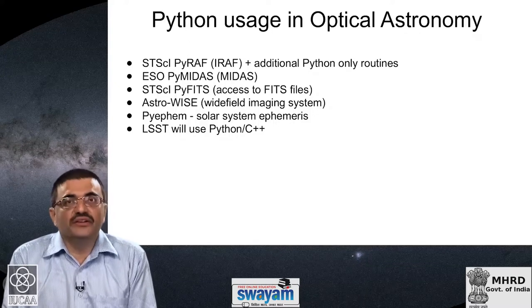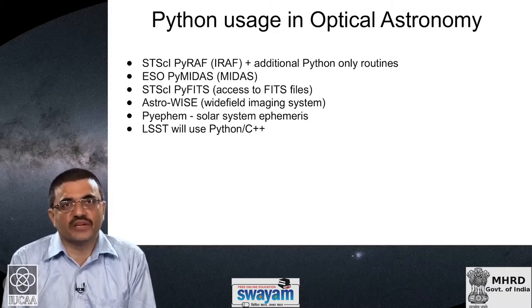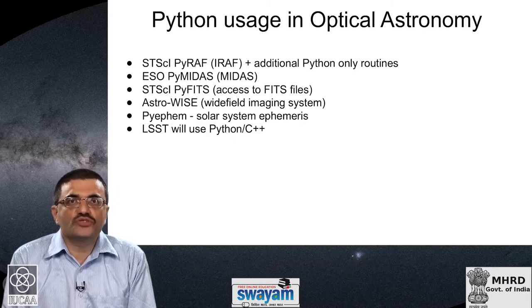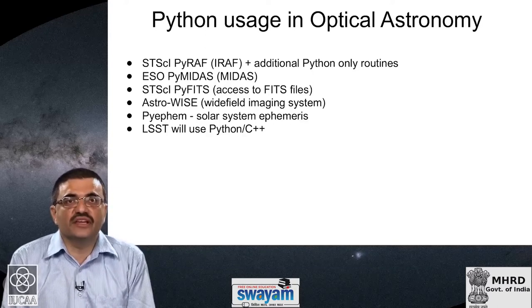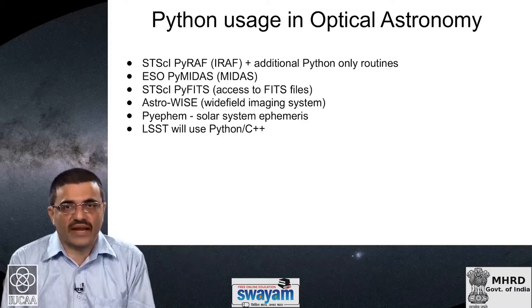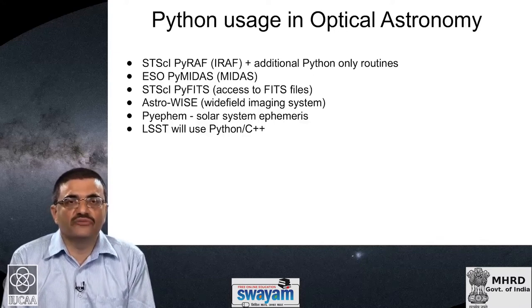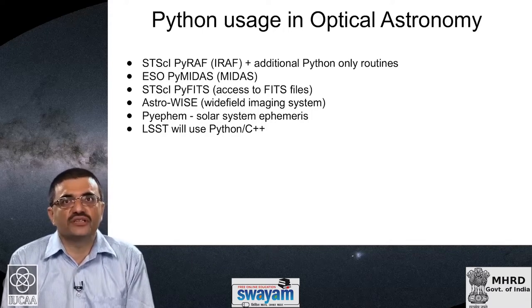Python is very widely used in all of astronomy. In optical astronomy, one of the most widely used packages for optical data analysis is a package called IRAF — Image Reduction Analysis Facility — which was developed several decades ago and is still in use. With the advent of Python, IRAF has been wrapped as a Python package, meaning you can use any IRAF command from within a Python program. This is done using a package called pyRAF, which wraps all of IRAF and also provides additional Python-only routines.